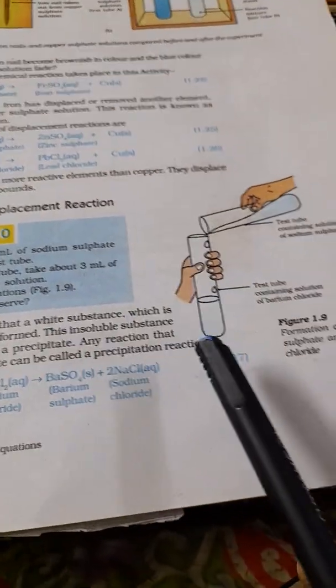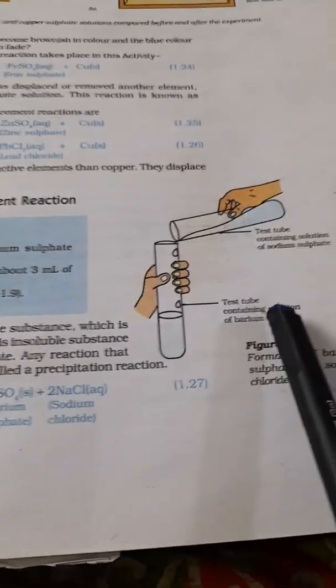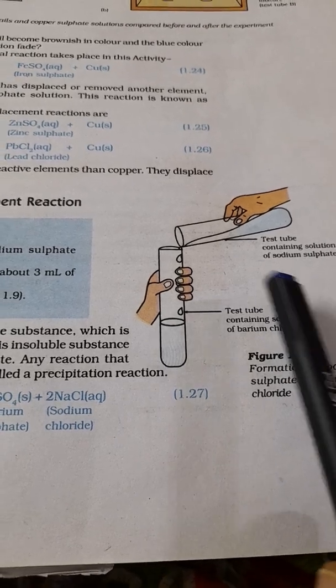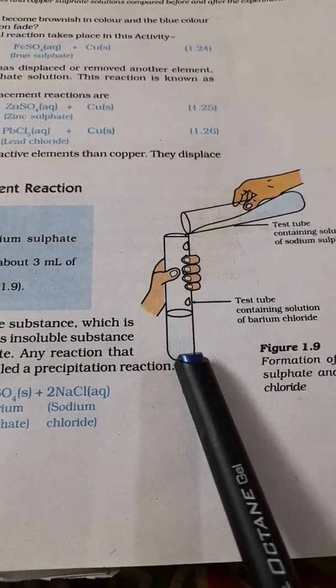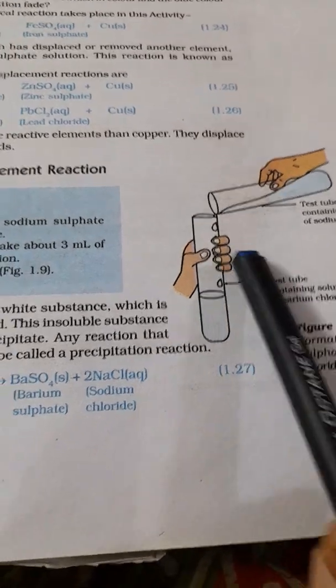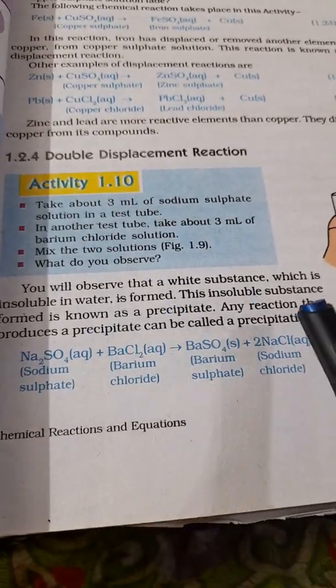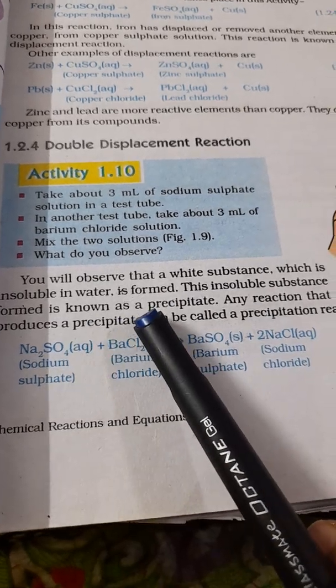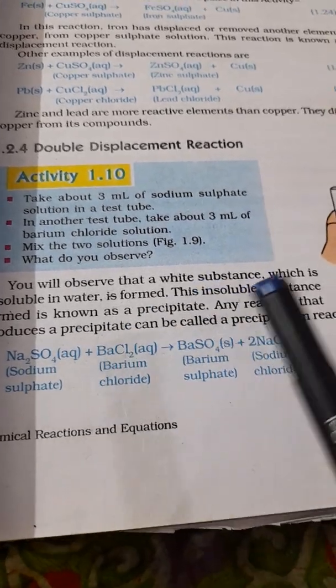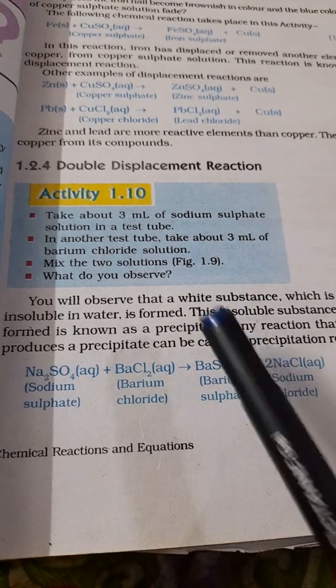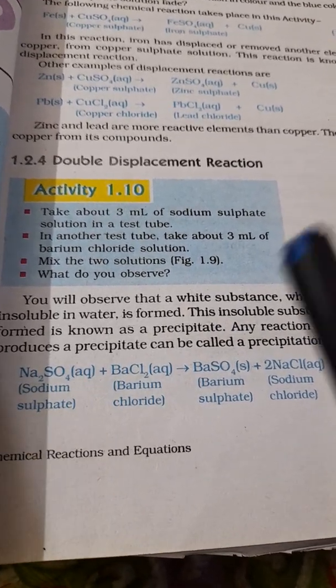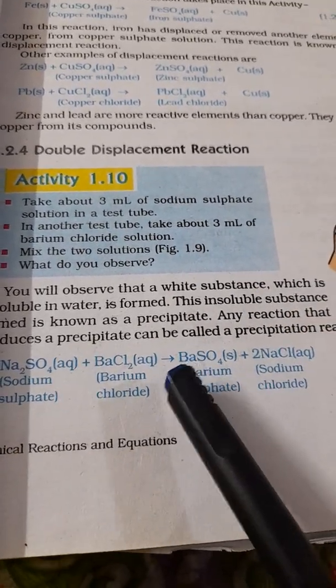Here see there are two test tubes, one having solution of sodium sulphate, another containing barium chloride. Now if you mix these two, what will happen? You can see a white substance which is insoluble in water. What is meant by insoluble? You can see that white color, just like curd in water, white color will be seen as precipitate.